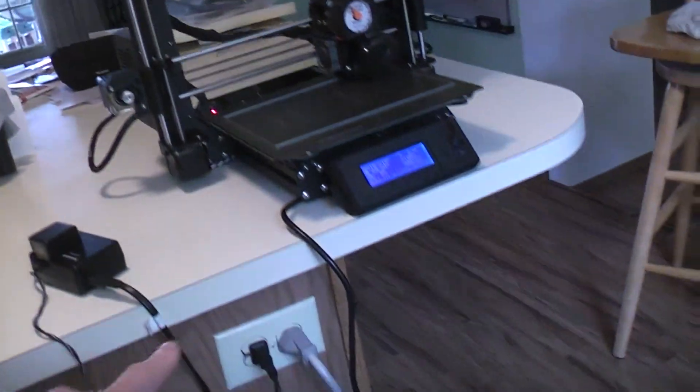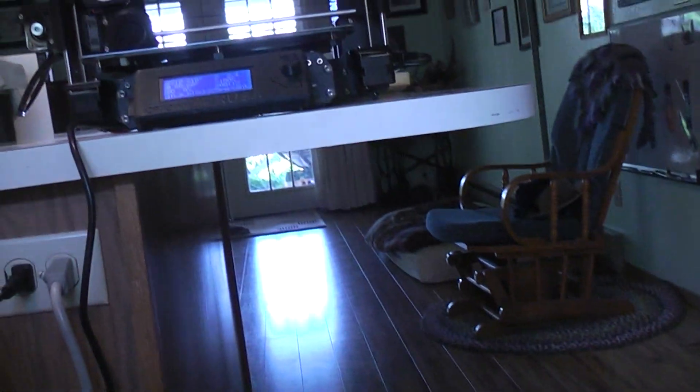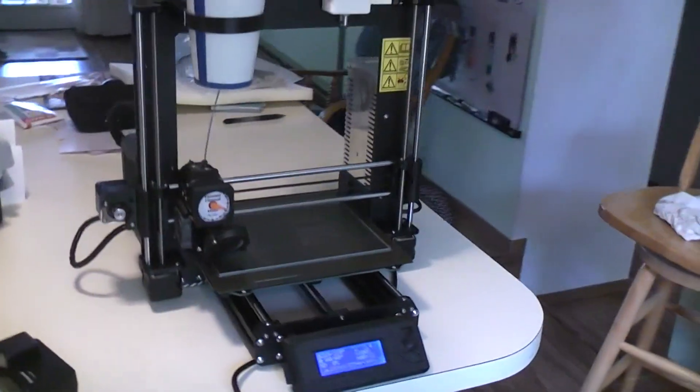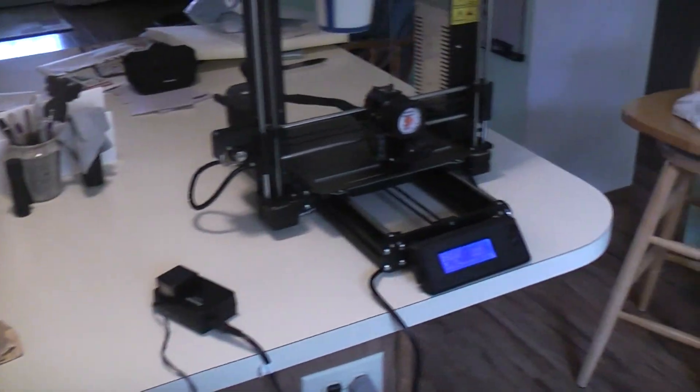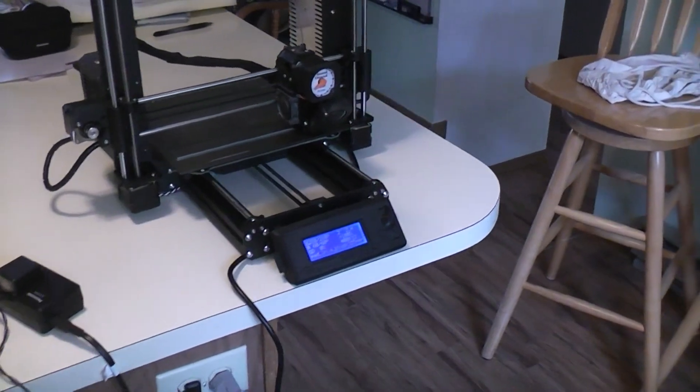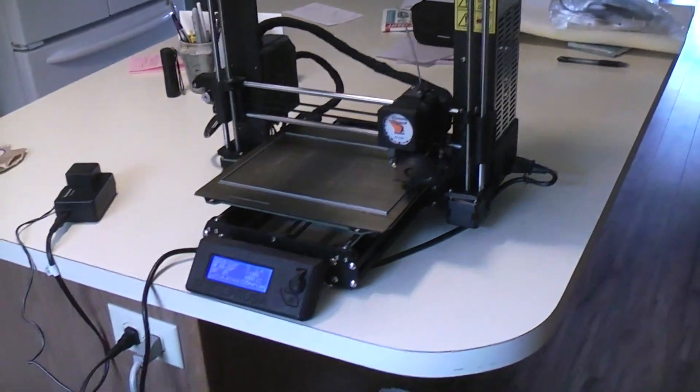Also consider the fact that the part of the counter that this printer's on is an overhang, so it's unsupported. Again, any little sound that happens up here gets amplified by this whole hollow counter and this overhang. This is worst case. It has made it quieter in this worst case.